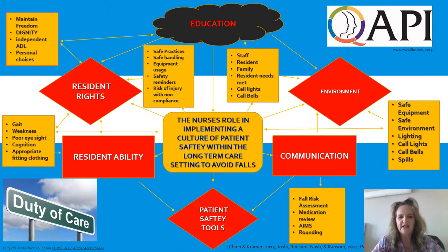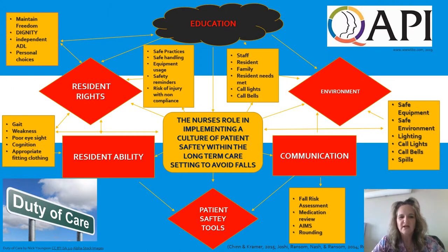Another factor is their ability. If they're assessed appropriately and they are able to walk, then they would not be at risk of falling. We use patient safety tools, such as fall risk assessments and medication reviews, to make sure that they are safe enough to have independent ability. If their weakness, cognition, or gait is off, it is going to affect them having falls. Education needs to be a huge part — the resident's ability needs to be consistently monitored in order to prevent falls.